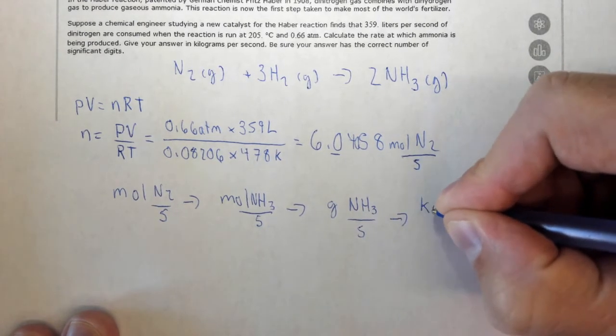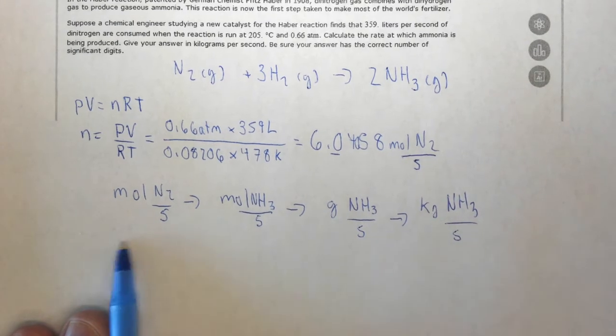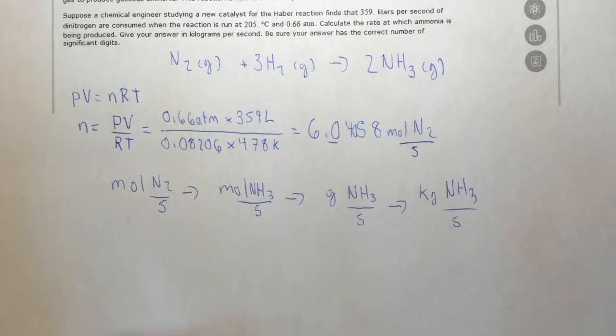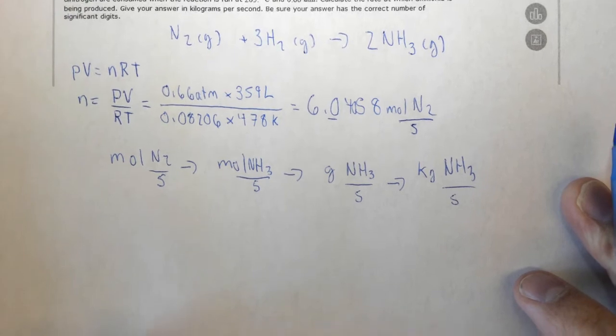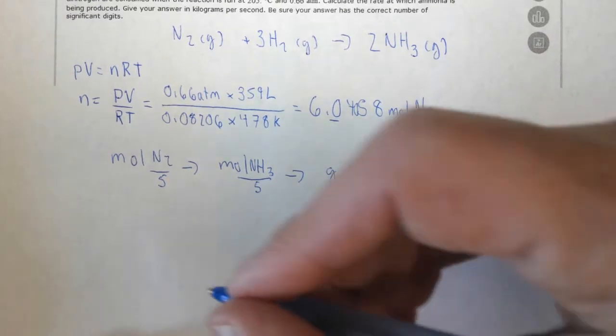to finally kilograms of ammonia, and of course it's still per second. So this is essentially our plan of attack. This is very similar to problems that you've done in the past. The only new twist here is that it has this per second thing, which you don't really need to worry about.